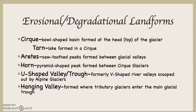A hanging valley is formed where tributary glaciers enter the main glacial trough. Because alpine glaciers go through valleys that were once river valleys, you may have a dendritic pattern. With a dendritic stream pattern, you have the main river and tributaries that enter into it. The same happens with glaciers — you have a main glacier running through a valley and then tributaries. Those tributaries create hanging valleys.